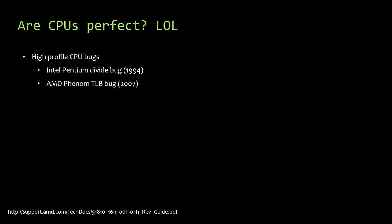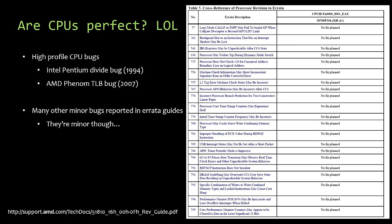So CPUs must be perfect then? Well, obviously not. Many are familiar with infamous CPU bugs like the Pentium divide bug in the 90s or the AMD TLB bug in 2007. If you open up the errata guide for a modern CPU, you'll see things listed — some with "no fix planned." That said, these issues are generally very minor. In most cases, they simply don't matter or there are software workarounds available, but there are a lot that still make it into silicon.